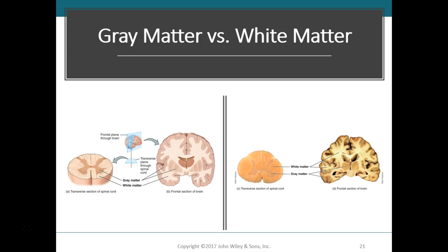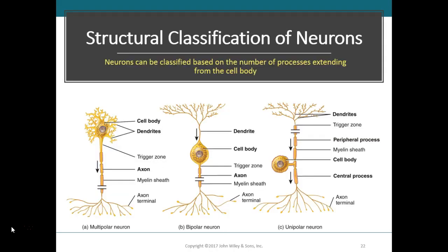The gray matter is going to be unmyelinated — in a fresh dissection it would be mostly composed of neuronal cell bodies, some dendrites, and unmyelinated axons. We can see an example in both a drawing and an image of freshly dissected tissue. In the spinal cord there's a white area surrounding an inner core of gray area that's somewhat butterfly shaped. The same pattern appears in a frontal section of the brain — a thin shell of gray matter covering the surface of the cerebrum and cerebellum, with white matter found within, which are myelinated fiber tracts.